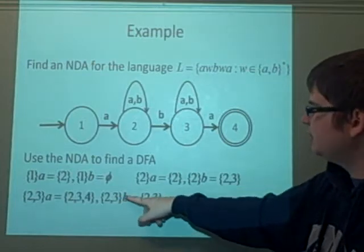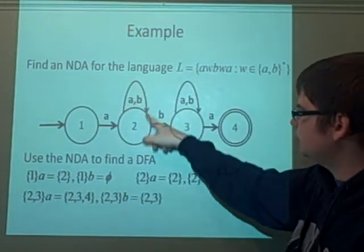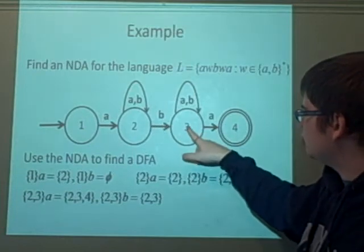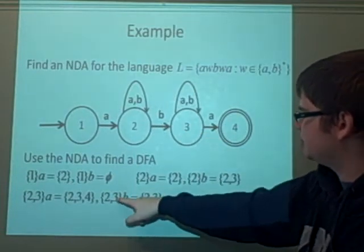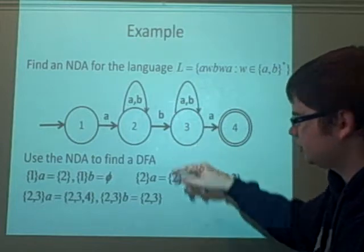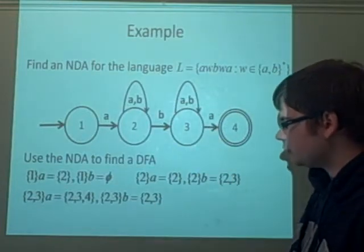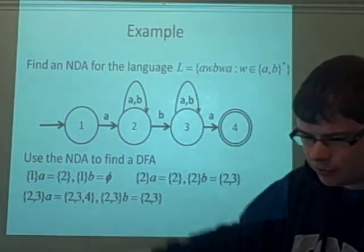With 2, 3, if we apply B, we can either stay in 2 or we can go to 3. Or if we apply B to 3, we can also just stay in 3. So that gives us the answer 2, 3. So what new ones have we got? The new one we've got here is 2, 3, 4.